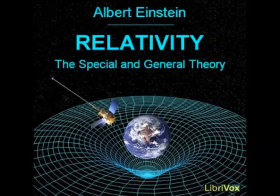No fairer destiny could be allotted to any physical theory than that it should of itself point out the way to the introduction of a more comprehensive theory in which it lives on as a limiting case. In the example of the transmission of light just dealt with, we have seen that the general theory of relativity enables us to derive, theoretically, the influence of a gravitational field on the course of natural processes, the laws of which are already known when a gravitational field is absent. But the most attractive problem to which the general theory of relativity supplies the key concerns the investigation of the laws satisfied by the gravitational field itself.